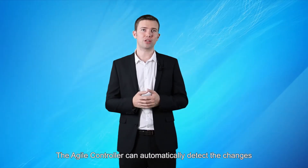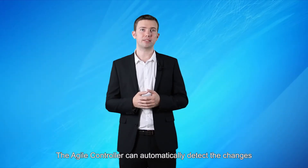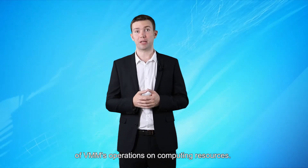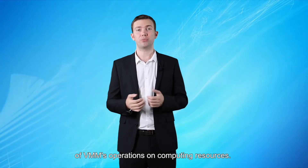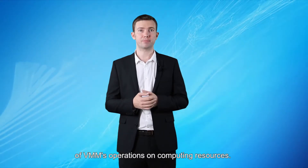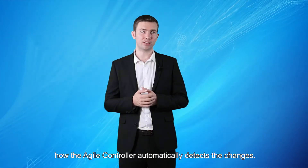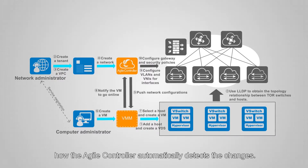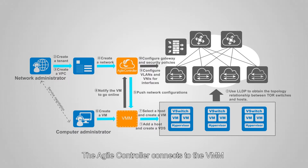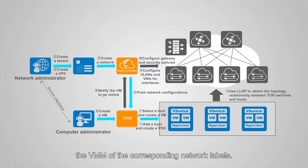The agile controller can automatically detect the changes of VMM's operations on computing resources. The agile controller connects to the VMM through the RPC interface and notifies the VMM of the corresponding network labels.